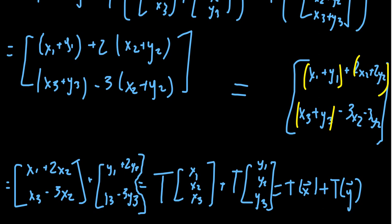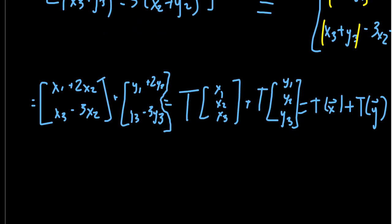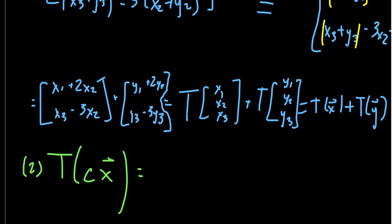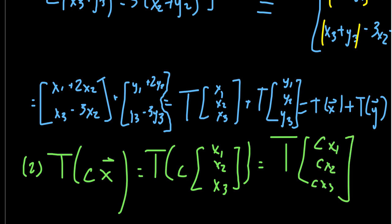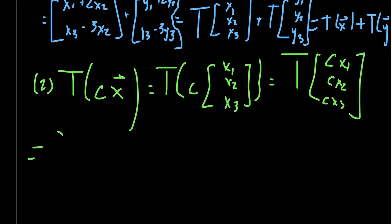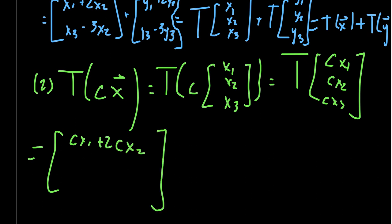Next, we need to show scalar multiplication is preserved. Take a generic vector X in R3, so X = (X1, X2, X3), and let C be some scalar. Scaling by C gives CX = (CX1, CX2, CX3). Applying the transformation T: the first component is CX1 plus 2·CX2, and the second component is CX3 minus 3·CX2.